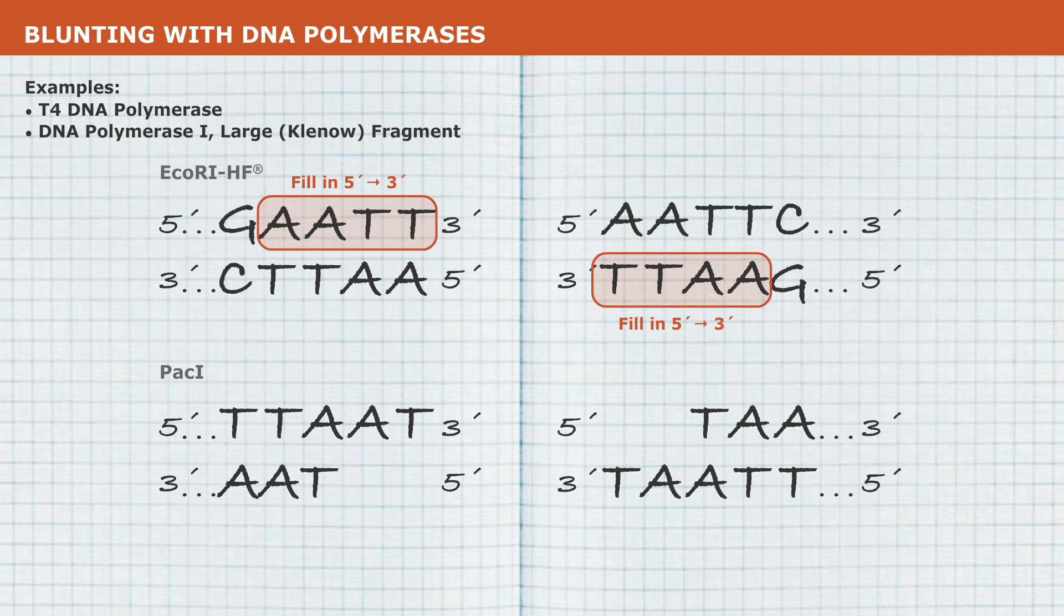Or, they can blunt a 3' overhang by degrading the overhang in the 3' to 5' direction using an exonuclease activity.